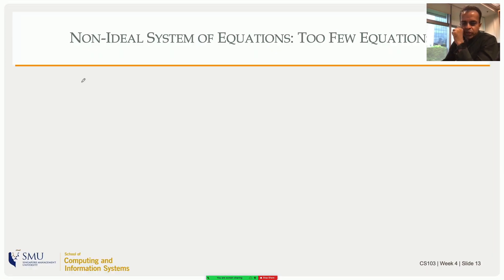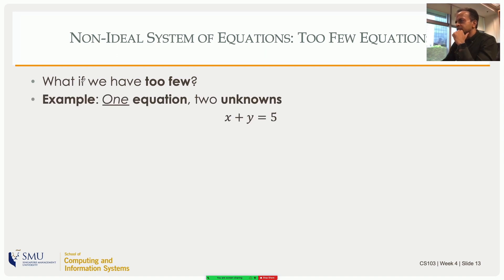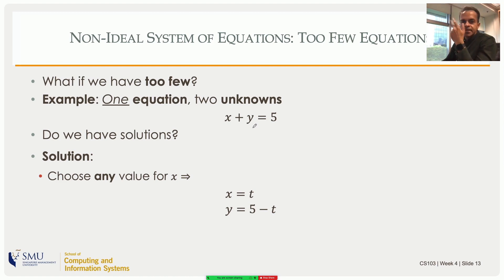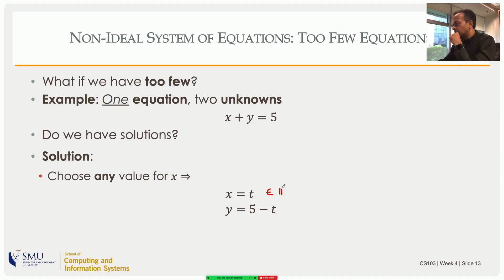If you have only one equation and two unknowns — too few equations — does it have solutions? Yes, because you can find any x and y satisfying the equation. If I choose x = t, then y = 5 − t is a solution for any value of t in ℝ. So you have infinitely many solutions.